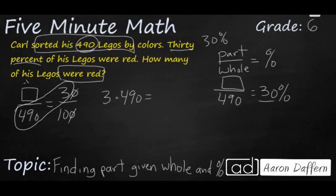490 times 3 is going to equal our unknown times 10. So first, let's go ahead and simplify here. Let's figure out what 490 times 3 is going to be. So 490 times 3, that's going to be 12, that's 14. So that's 1470.